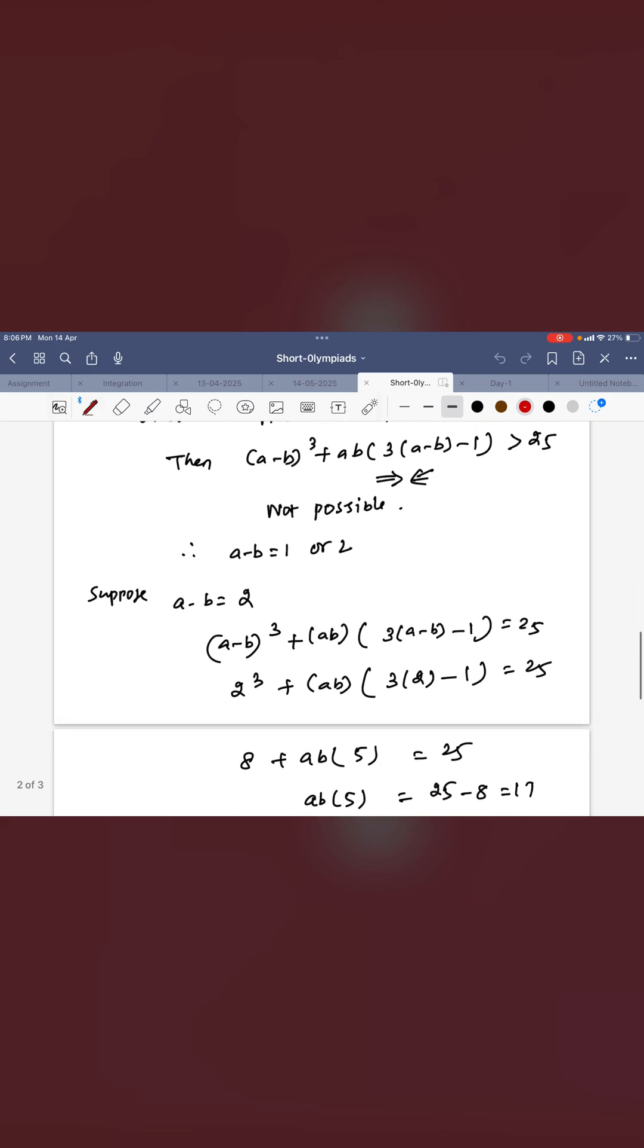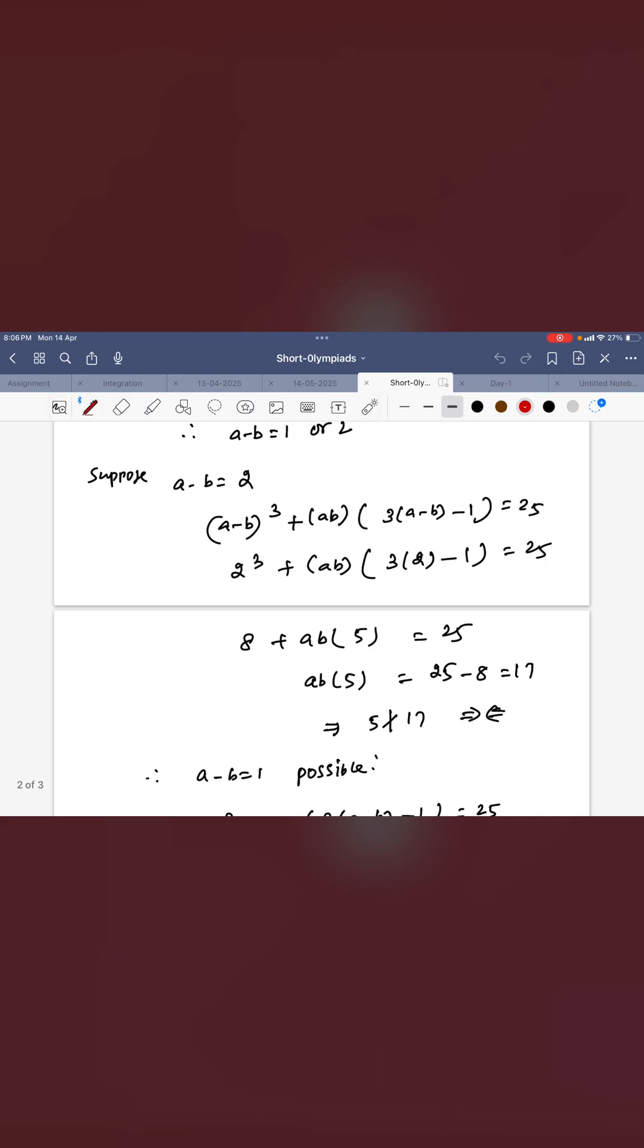Suppose A - B = 2, you can substitute. You can see that AB × 5 = 17. 5 does not divide 17, therefore this is not possible.